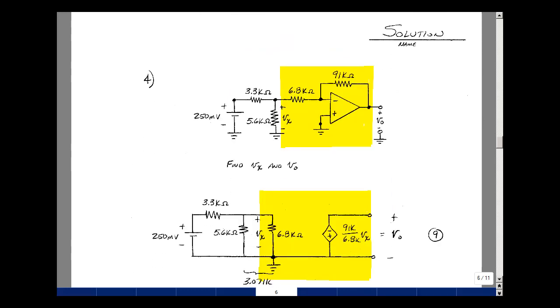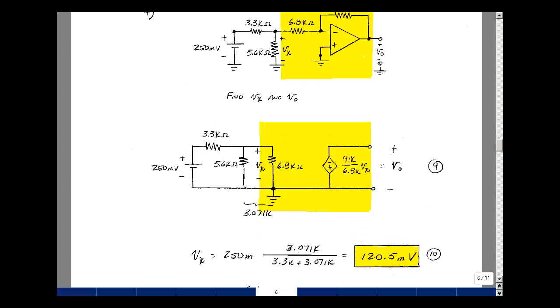In problem number four, we're given an op-amp circuit with a 250 millivolt input. We need to find the voltage V sub x and V out. We have a model for the inverting amplifier, so let's put that in. We'd have an input resistance of 6.8k, and then a gain of minus 91k divided by 6.8k. The voltage V sub x is a voltage divider with the 6.8k in parallel with the 5.6k, and that's equal to 3.071k. Voltage divider with 3.3k times the input voltage of 250 millivolts. And I get 120.5 millivolts. This is worth 10 points, no partial credit.